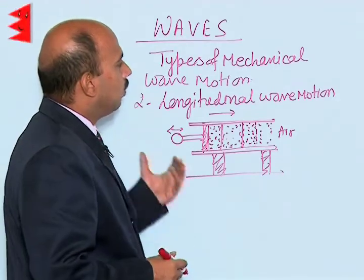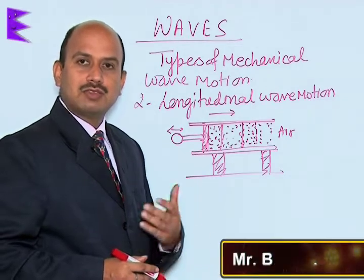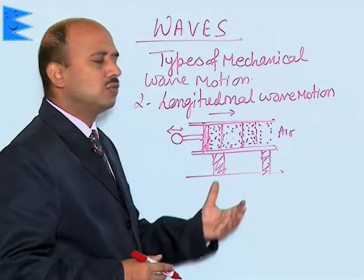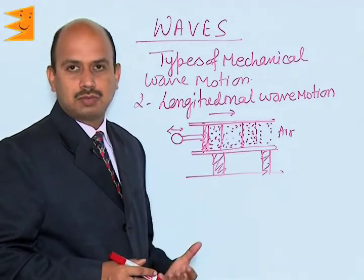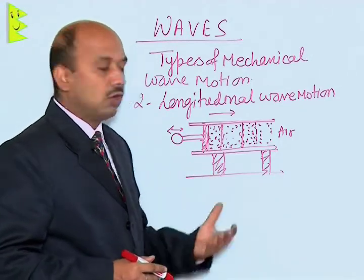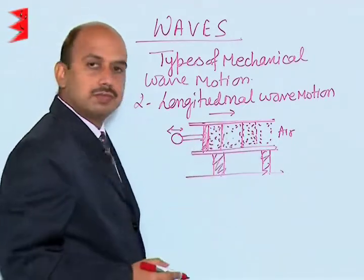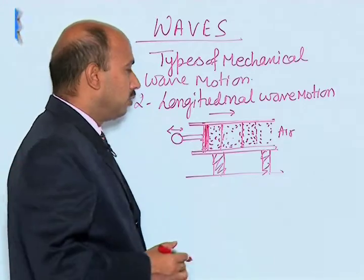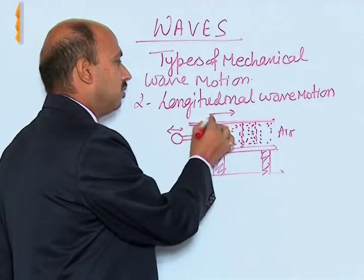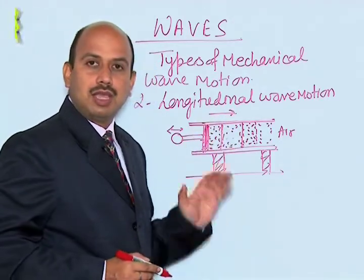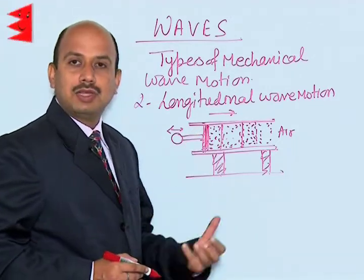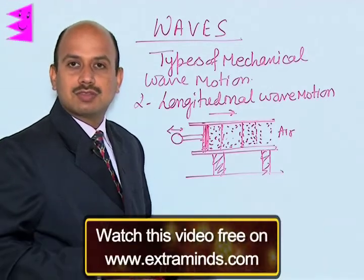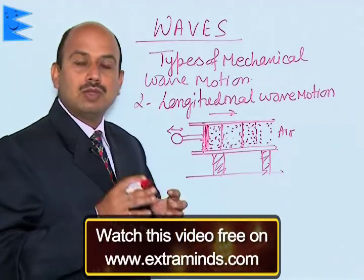In longitudinal wave motion, particles of the medium execute simple harmonic motion about their mean position in the direction of propagation of the wave. In the medium, compressions and rarefactions are formed due to a change in the density of the medium. For example, if a piston in a tube filled with air is moved to the right, the air gets compressed next to the piston — the air molecules come closer together and air pressure increases, forming a denser region compared to the rest of the medium.